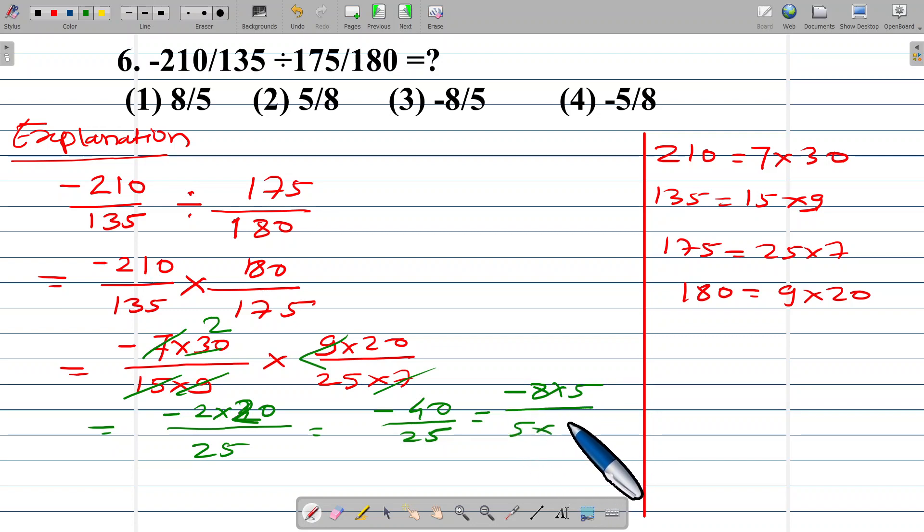Negative 40 means negative 8 multiplied by 5 and 25 means 5 into 5 and then 5 gets cancelled. So we get the answer negative 8 upon 5, this is option number 3. Option 3 negative 8 upon 5 is correct.